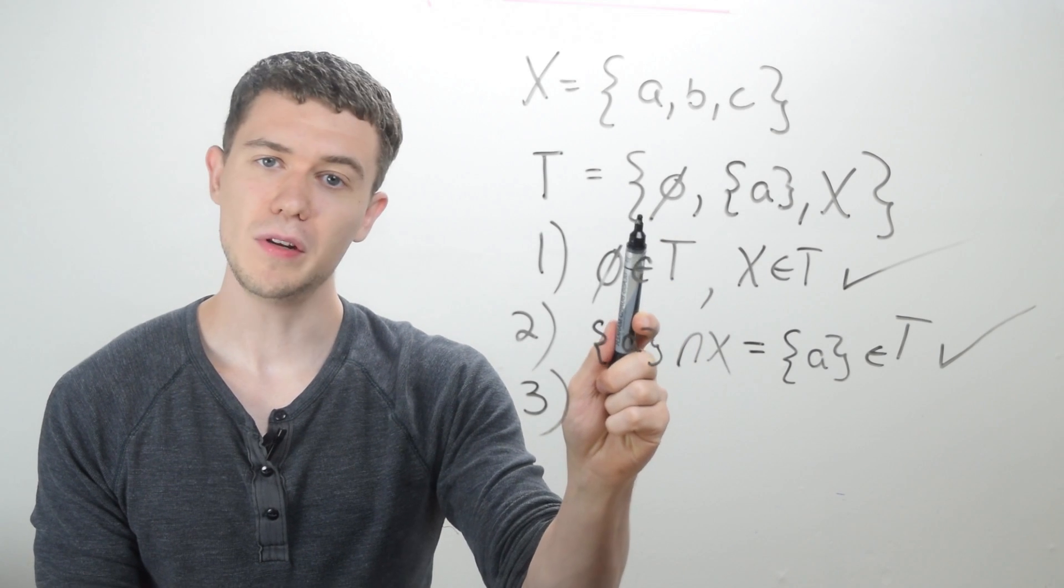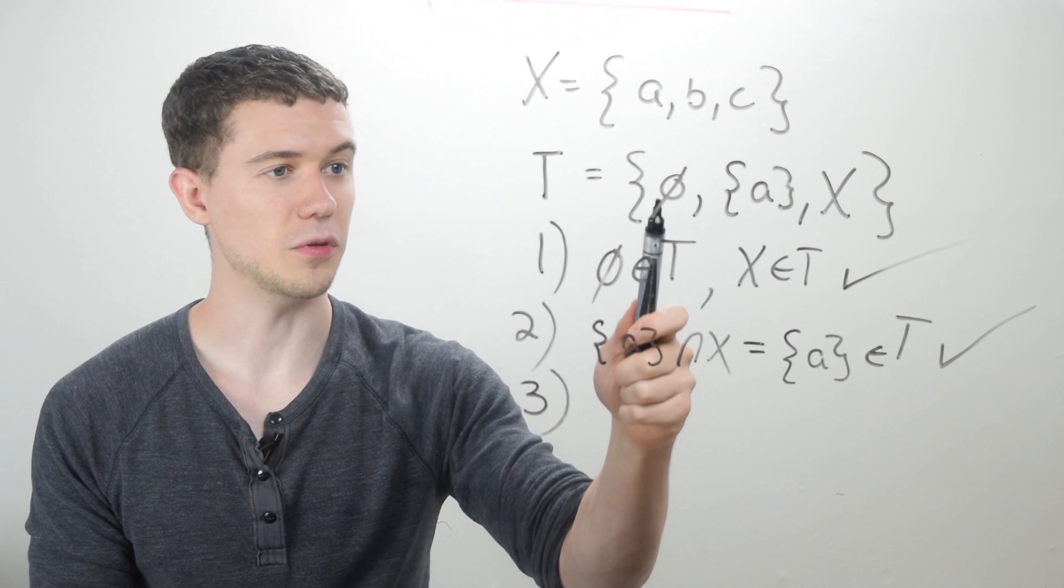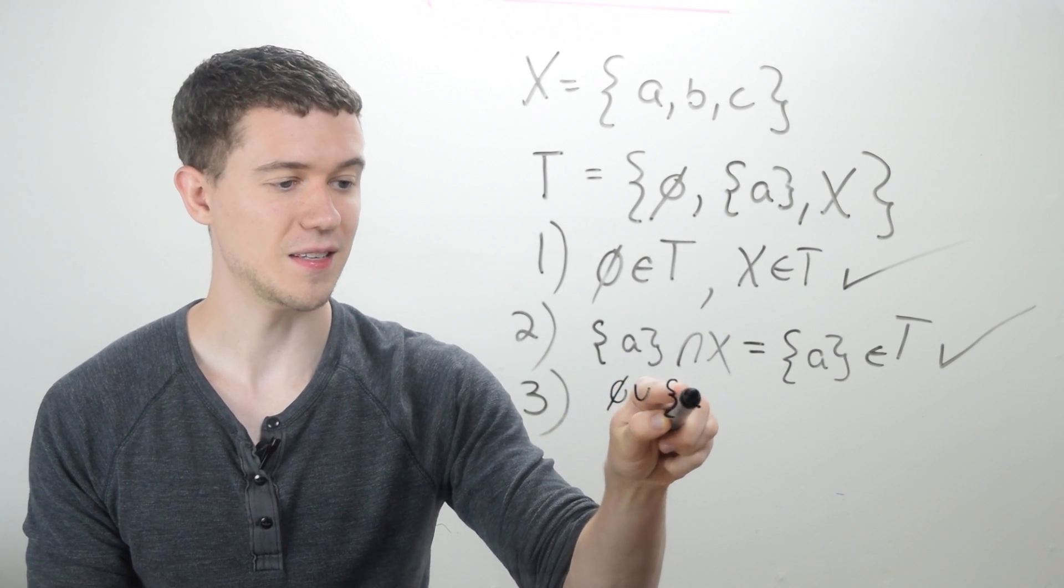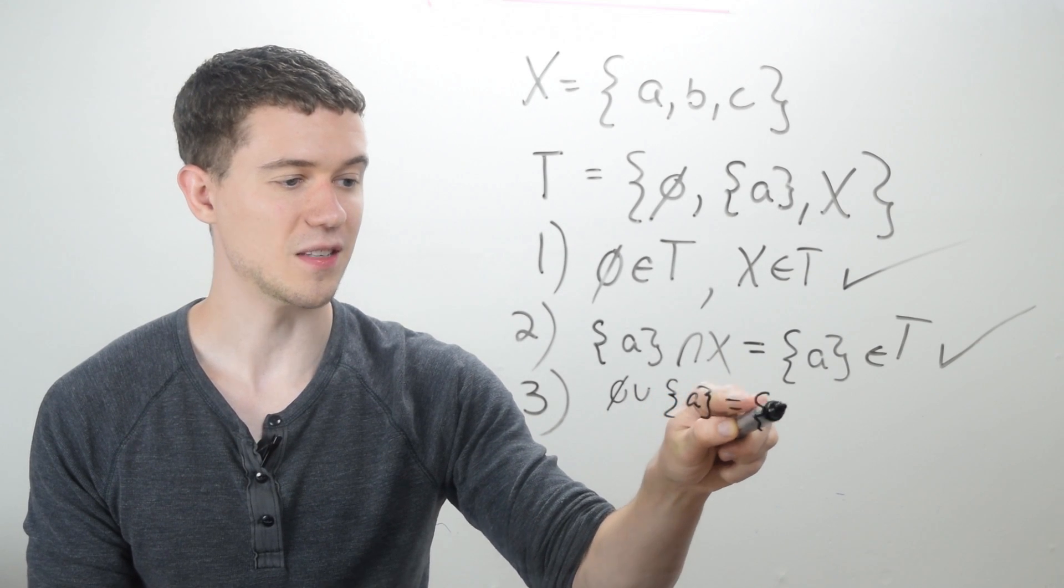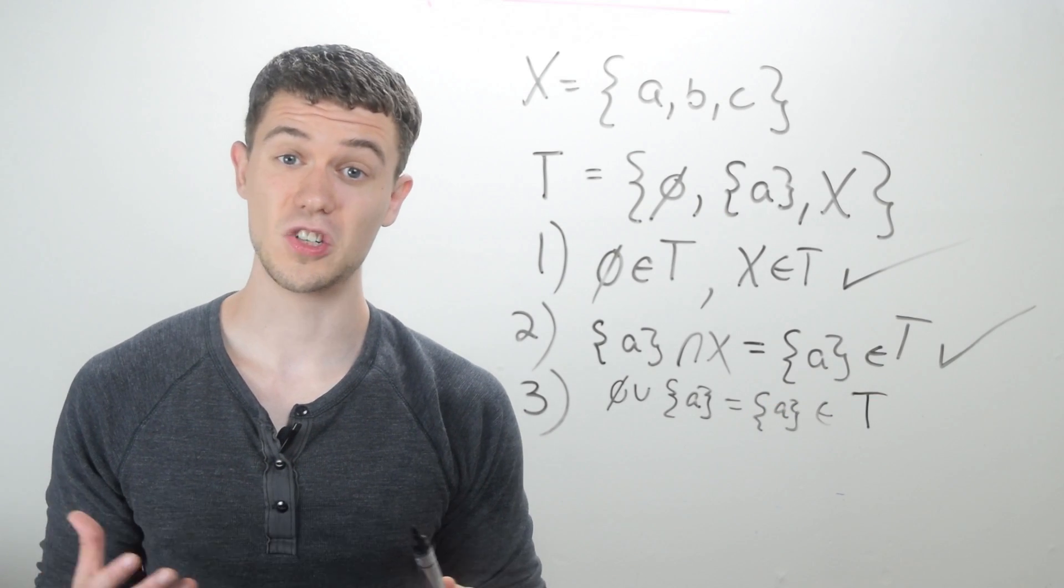So let's see. Well, the union of the empty set with anything is just that thing. So for example, the union of the empty set and the set containing A is just the set containing A, which we said is an element of our topology. So that's a good check.